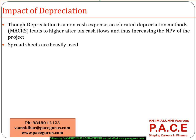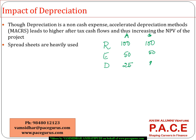Let me go through how depreciation plays a role in terms of cash flows. Assume revenues in two methods are 100. The expenses — fixed as well as variable — are the same in both. Let me assume one method uses accelerated depreciation and the other uses straight-line depreciation. So the depreciation in the accelerated method is 25, whereas in the straight-line method it is 10.